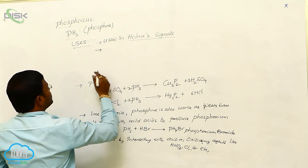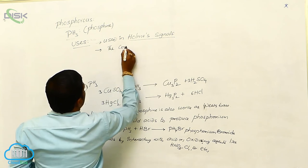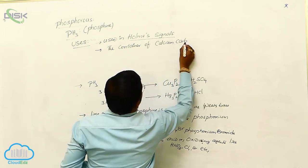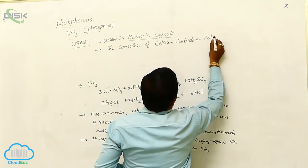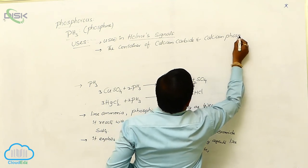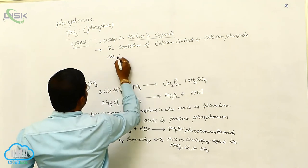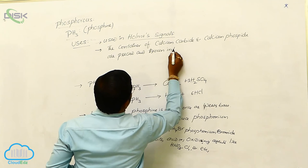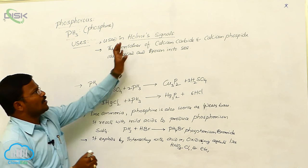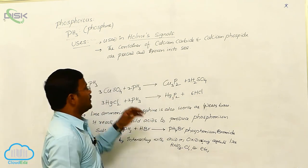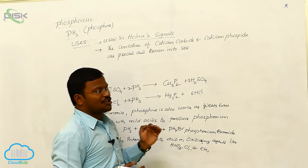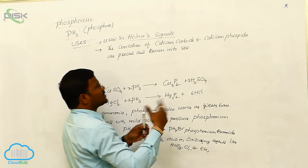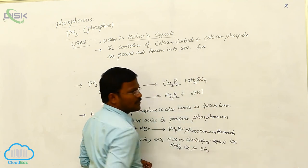During this risky process, the containers containing calcium carbide and calcium phosphide are pierced and thrown into sea. So what will we expect? During the Holmes signal, to provide an alarm or signal to the rest of the people, the container which consists of calcium carbide and calcium phosphide are pierced and thrown into the sea. So when they are thrown into the sea, they react with water and produce this file, file with huge form.